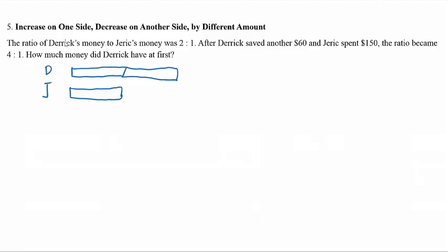The ratio of Derek's money to Jerry's money was 2 to 1. I've already drawn a model over here. Derek is 2 units while Jerry is 1 unit. After Derek saved, save means that Derek's money increased by $60 and Jerry spent $150. Spend means the money will decrease for Jerry. The ratio became 4 to 1 and how much money did Derek have at first?